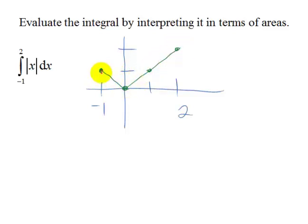So if we're looking at the area, we have two different triangles. This one is one wide and one high and this one is two wide and two high. So this integral